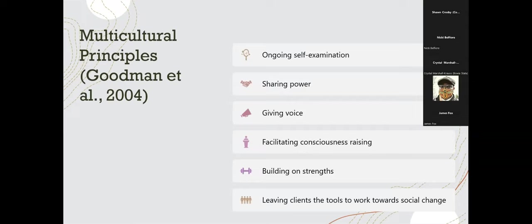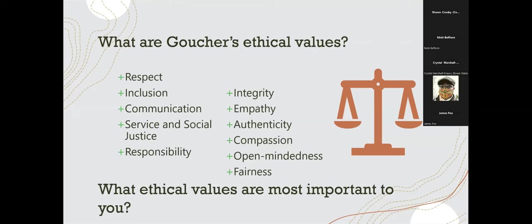We talked about Harrow's cycle of socialization and how socialization can lead to biased beliefs that contributed to psychologists engaging in these kinds of behaviors. I also introduced the multicultural principles to go hand in hand with the APA code of conduct, facilitating the value of cultural humility. Finally, we talked about Goucher's ethical values and community principles, and I asked students to think about what ethical values were most important to them — consistent with practices in motivational interviewing and acceptance and commitment therapy, where being connected to one's values gives a sense of direction.